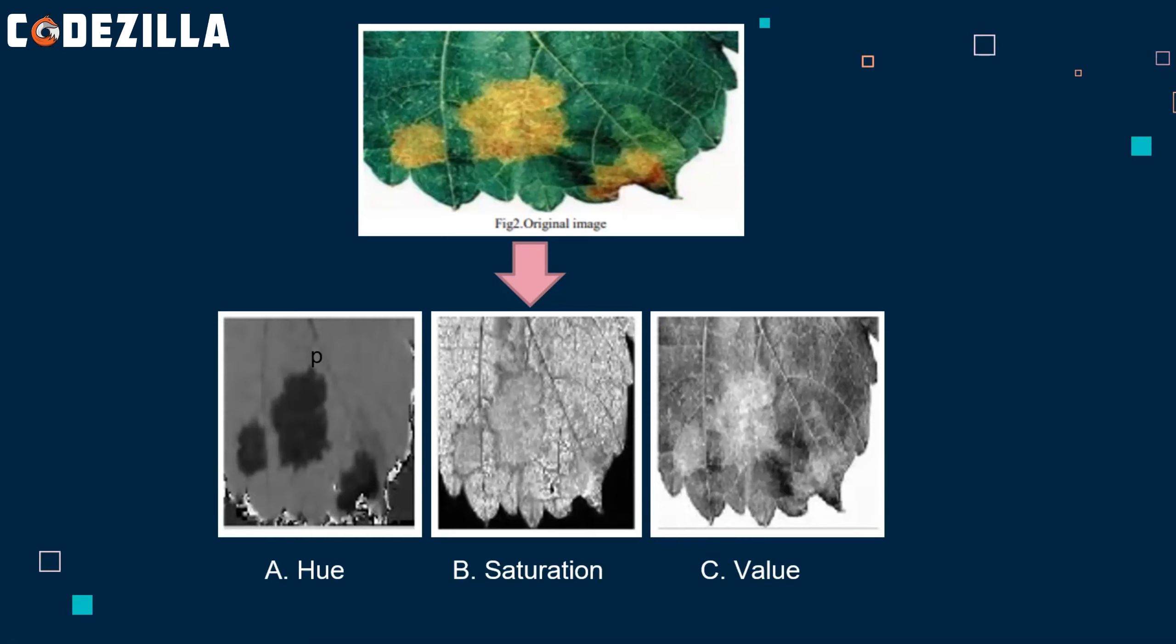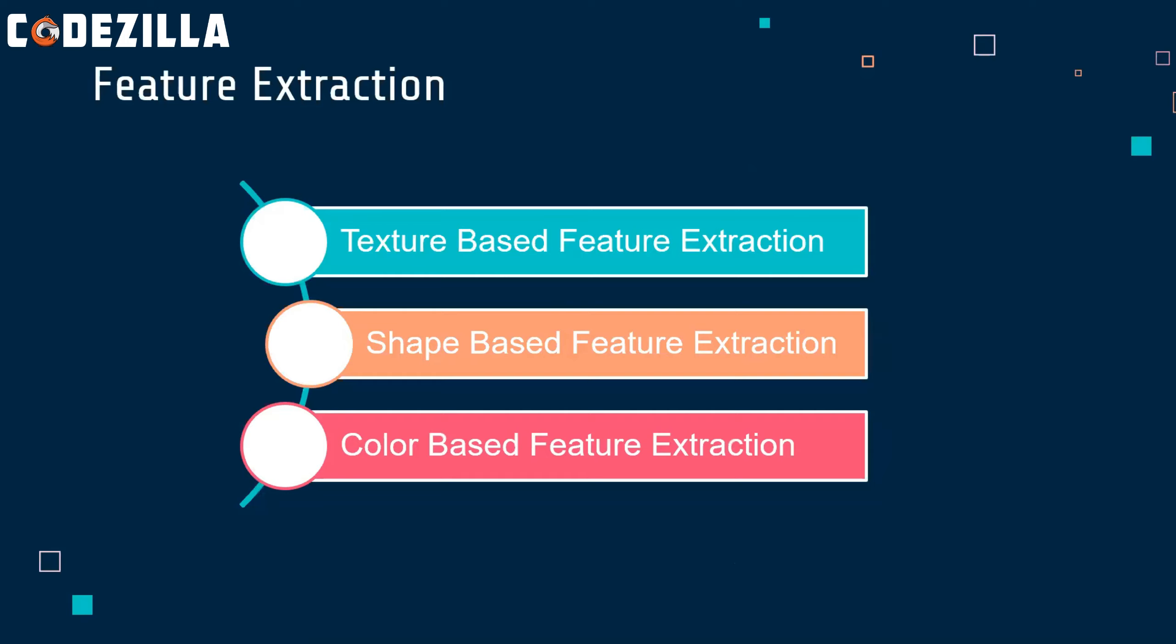In this Hue, we did not need the whole leaf. We only needed the infected part. That's why feature extraction is done to retrieve it. Let's see what is feature extraction. Feature extraction is related to dimensionality reduction. The diseased part is what is to be extracted. There are three methods for feature extraction.